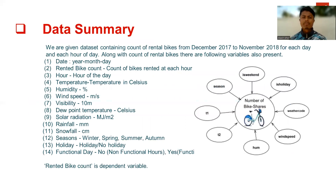Data summary: we are given a dataset containing count of rental bikes from December 2017 to November 2018 for each day and each hour of day. Along with count of rental bikes, there are the following variables also present: date, year, month, day. For rental bike count — count of bikes rented at each hour.